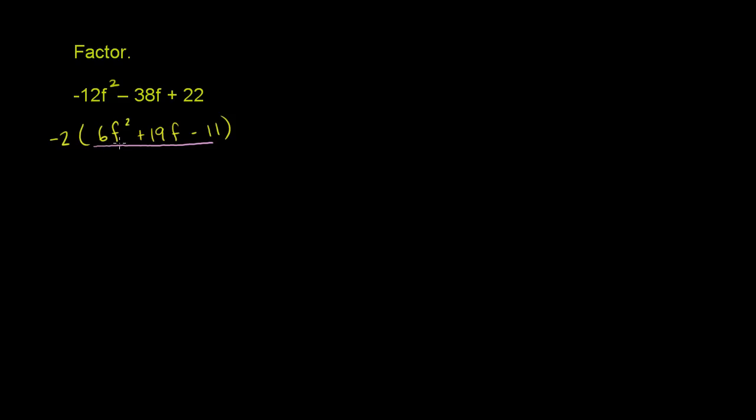We need to look for two numbers whose product is 6 times -11. So a × b needs to equal 6 × -11, or -66. And a + b needs to equal 19.